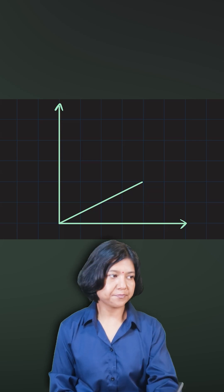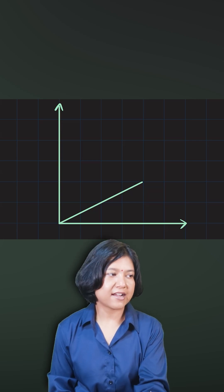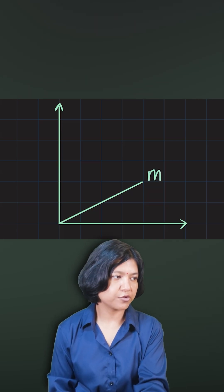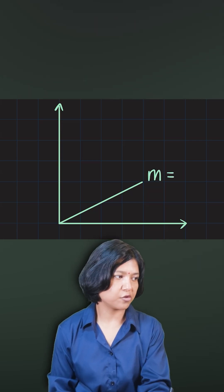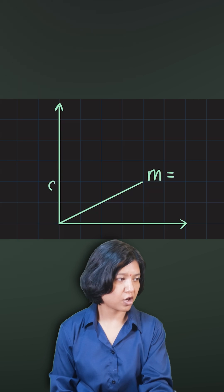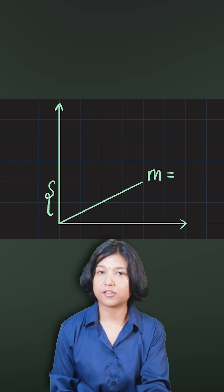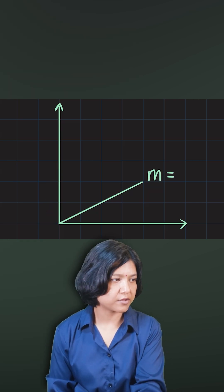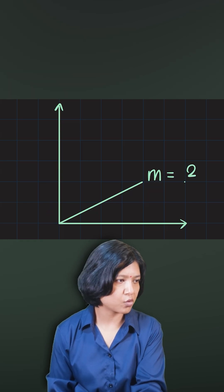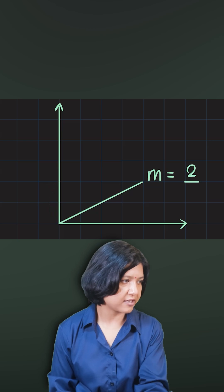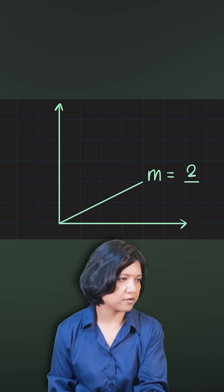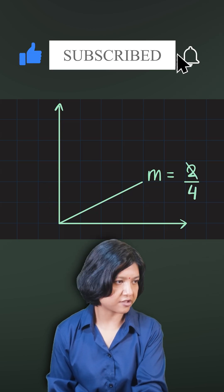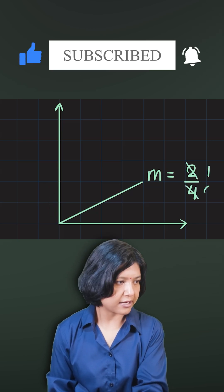I have a line given to me. For this line, if I ask you to find the gradient, you would do just two things. You would find the vertical move and the horizontal move. Here you are vertically rising by two units and then you went right by four units, which is just one by two. That is the gradient.